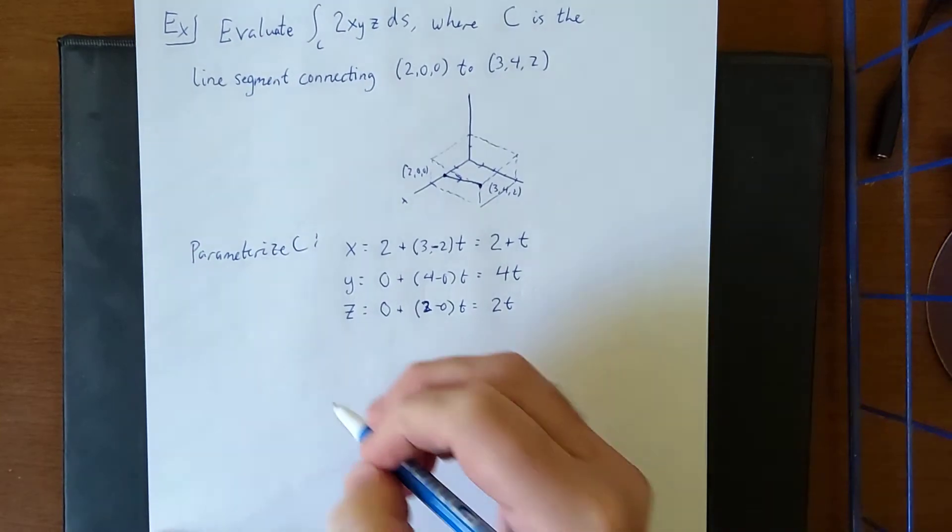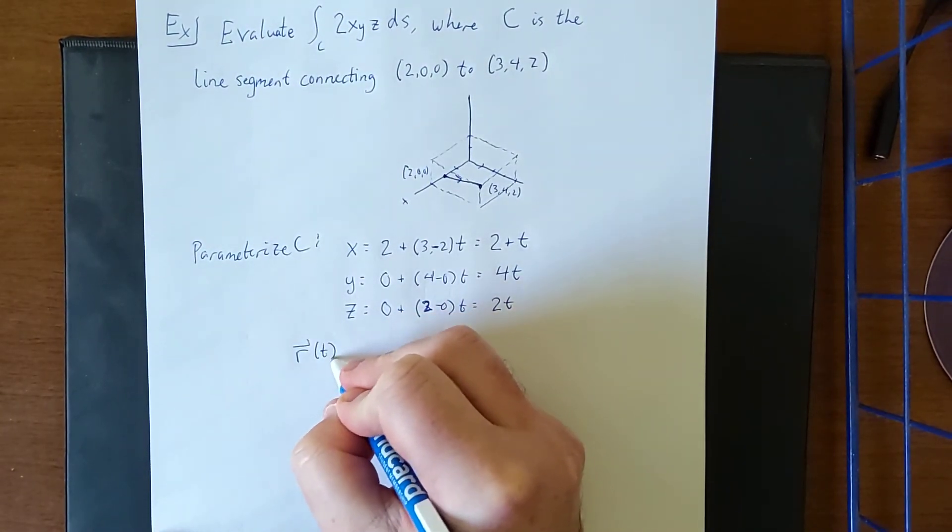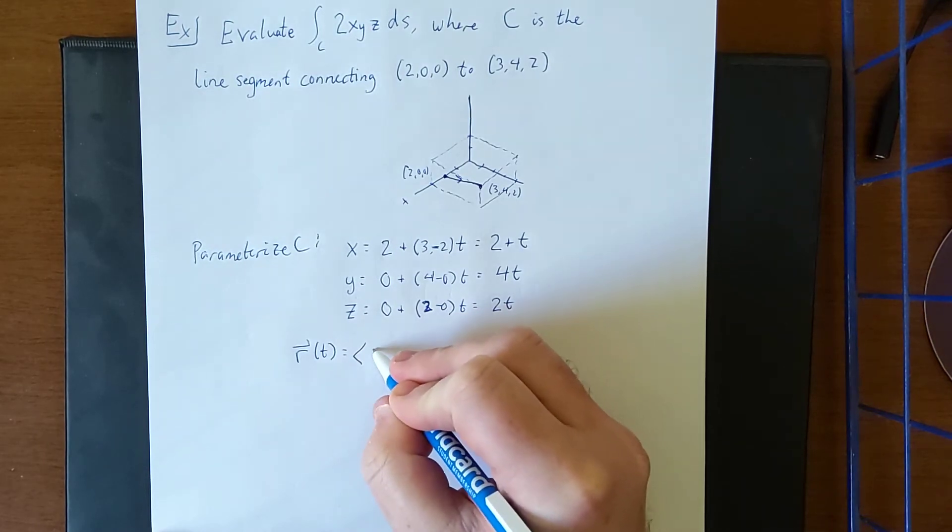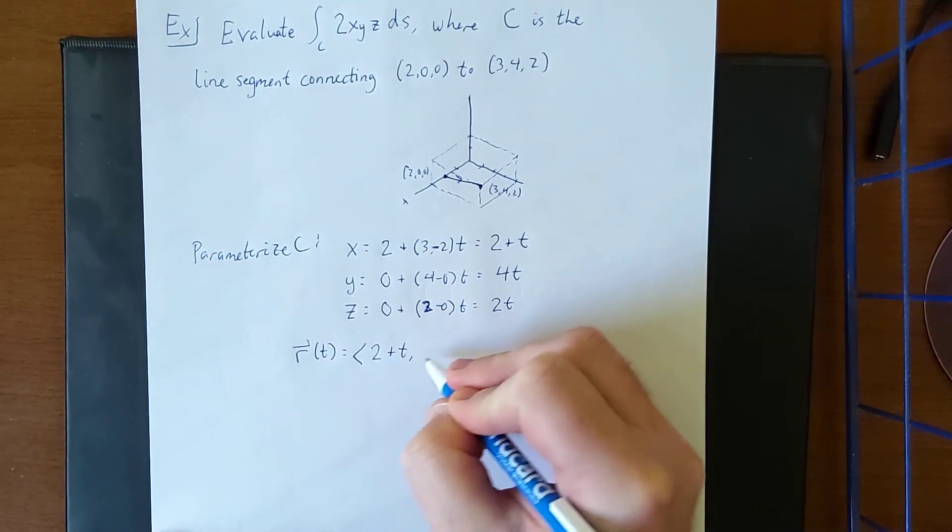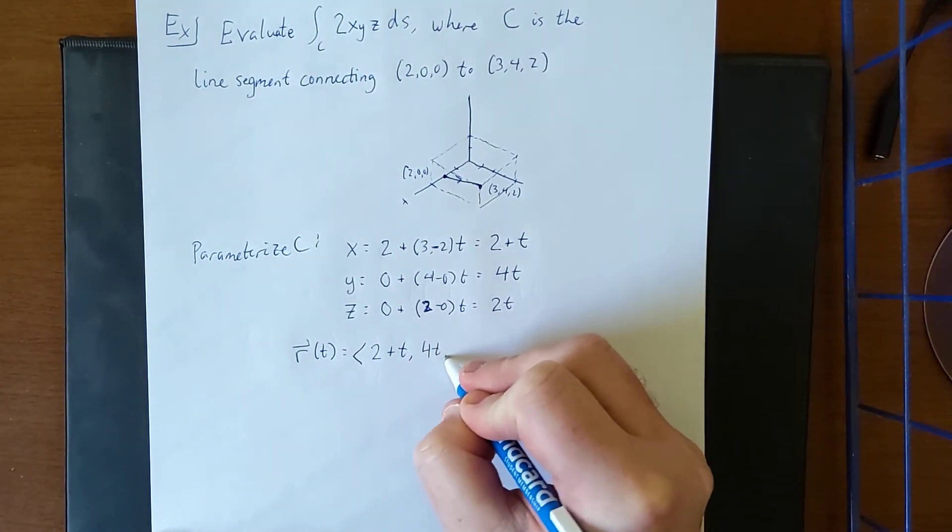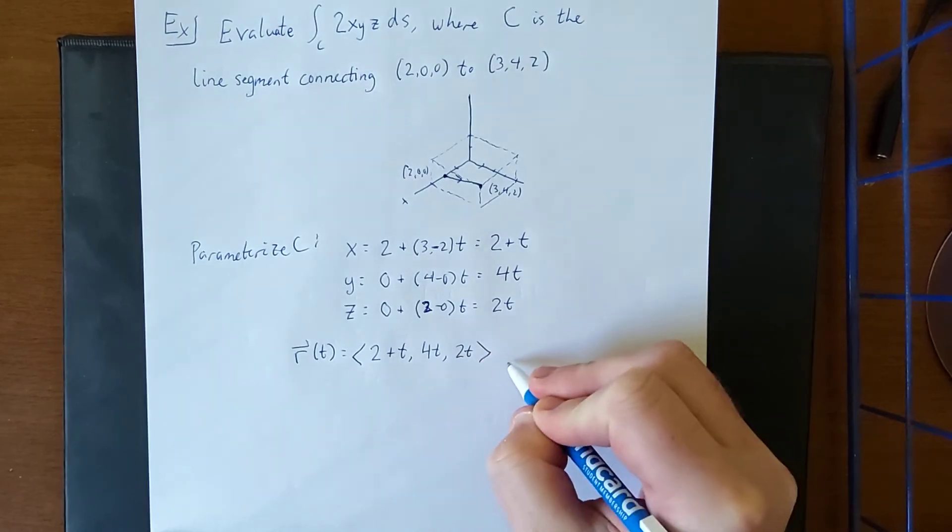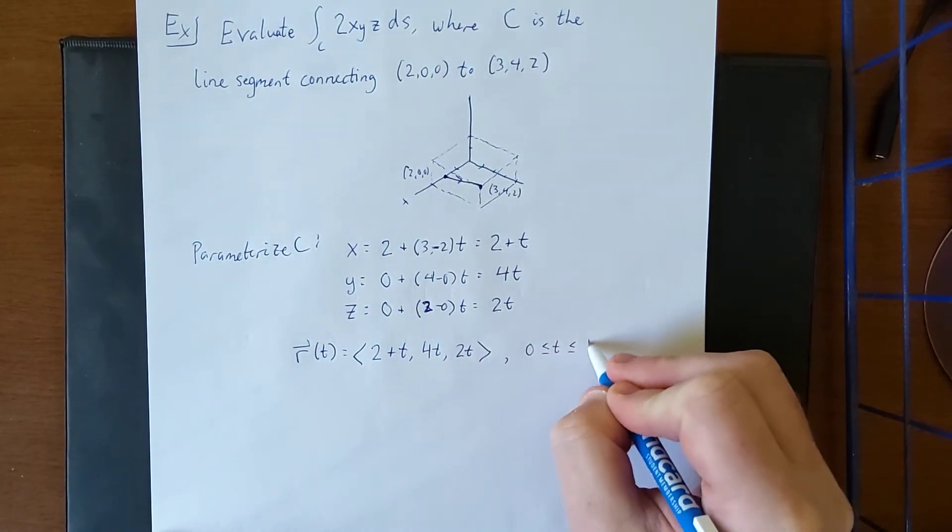Now frequently what we would do with this is describe this curve using a vector function. This would be the vector ⟨2+t, 4t, 2t⟩, with t going from 0 to 1.